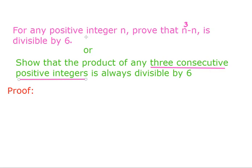Take three consecutive positive integers. For the first statement, you have to take n minus 1, n, and n plus 1. For the second statement, you can take n minus 1, n, n plus 1 or n, n plus 1, n plus 2. Consecutive means numbers which follow in order, coming without a gap — for example, 7, 8, 9 are consecutive numbers.